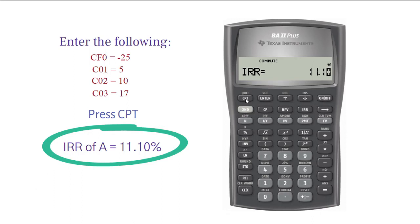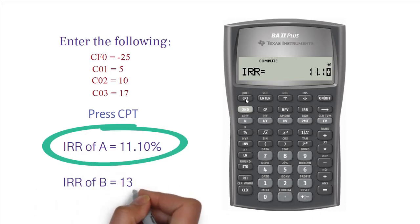Now, if you follow the same steps, you will get the IRR for project B as 13.18%.